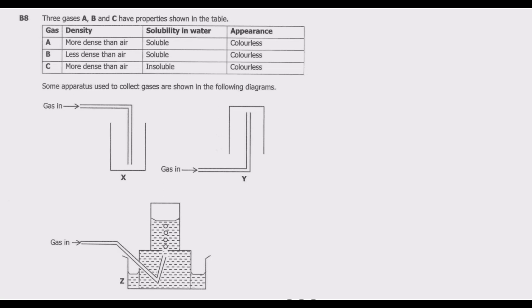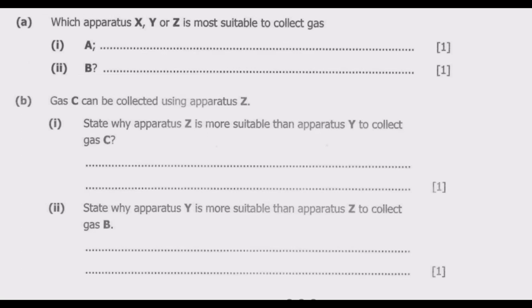Question B8 deals with three gases A, B and C with properties shown in the table. We have gas A, B and C, then their density, solubility in water, and appearance. Some apparatus used to collect gases are shown in the following diagrams. Then we have question A: which apparatus X, Y or Z is most suitable for collecting each gas.